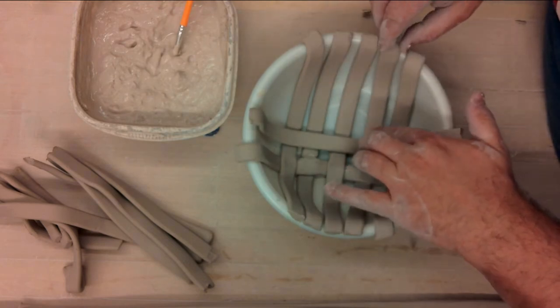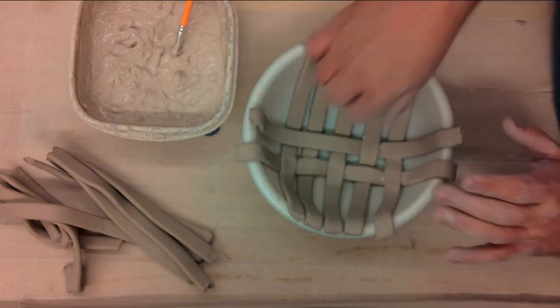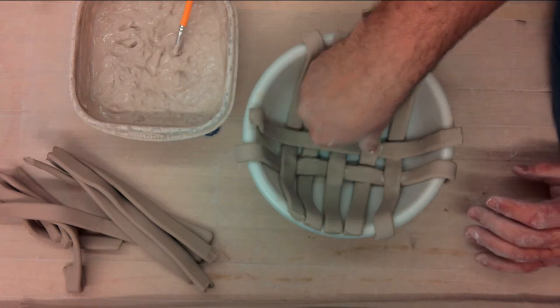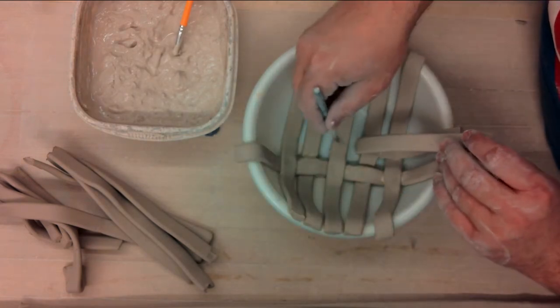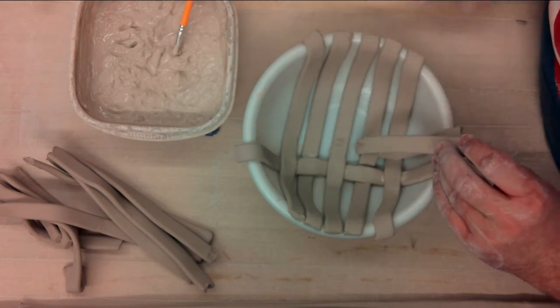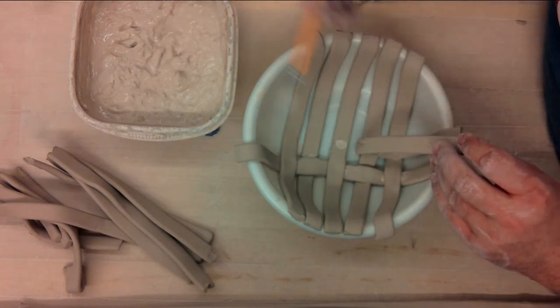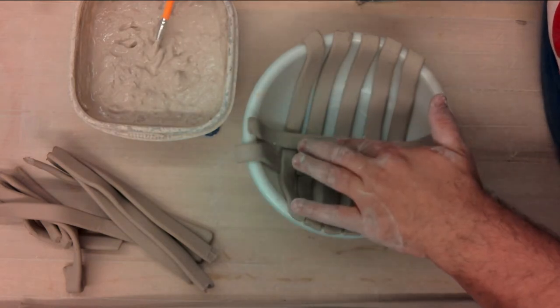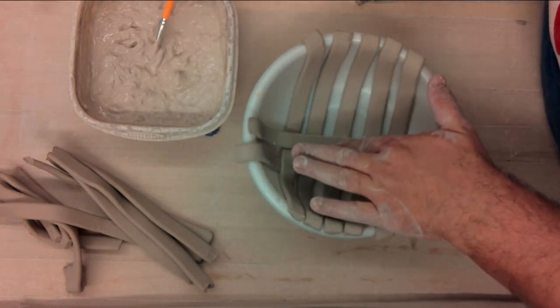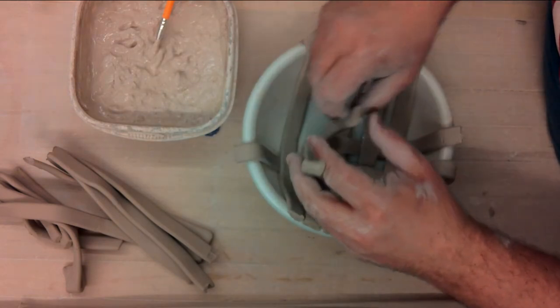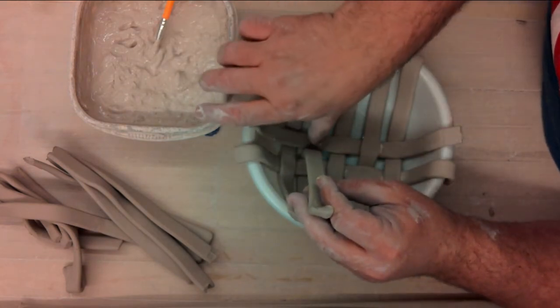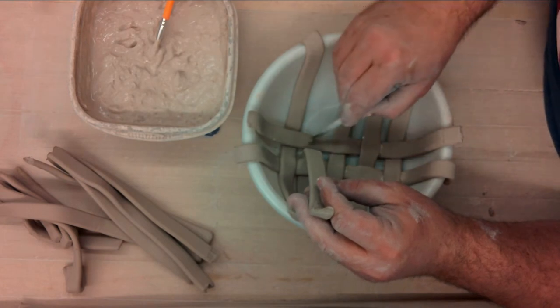Every other row needs to go over and under. They should always be opposite of each other. I continue scoring and slipping. I want to use a paintbrush to do the slipping on this one, just because my hands are going back and forth so much. I don't want to use my fingers to do the slipping, though you certainly could.